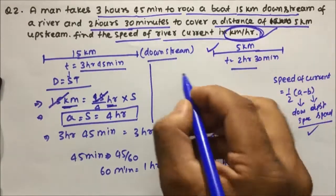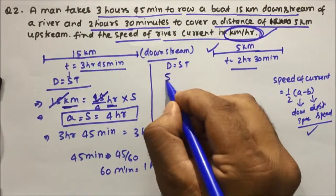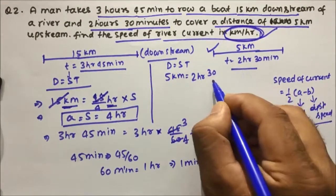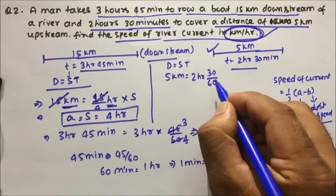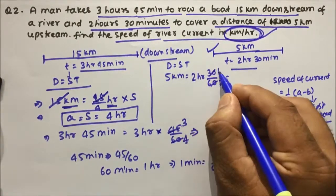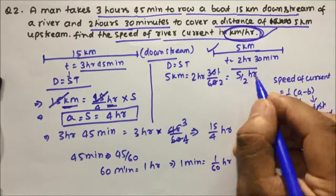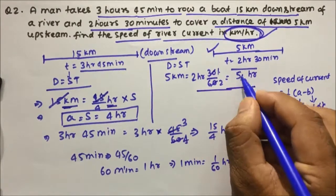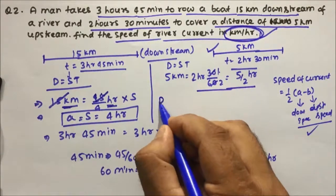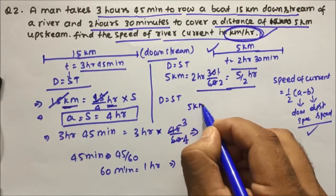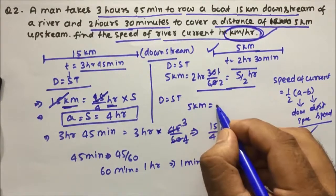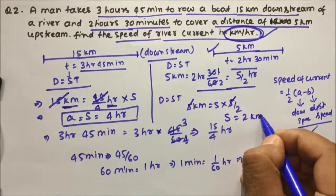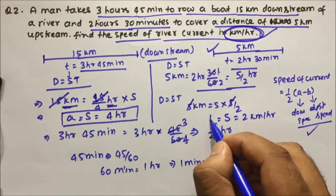For upstream: D = S × T. Upstream distance = 5 km, time = 2 hours 30 minutes. Converting 30 minutes to hours: 30/60 = 1/2. So 2 hours 30 minutes = 2 + 1/2 = 5/2 hours. Upstream speed (B) = 5 ÷ (5/2) = 2 km per hour. So we have downstream speed = 4 km/hr and upstream speed = 2 km/hr.